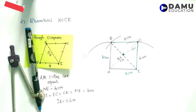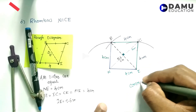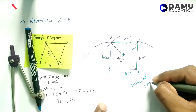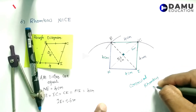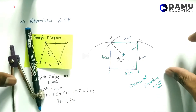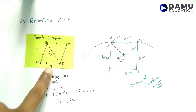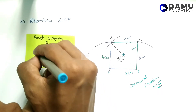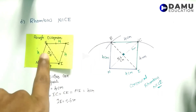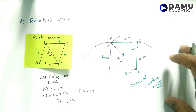Like this we need to construct the rhombus. We have constructed rhombus NICE. This is the rough diagram. These are all also 4 centimetres — here also 4, this is also 4 centimetres. These are all 4 centimetres. Like this we need to take. Thanks for watching. Please subscribe.